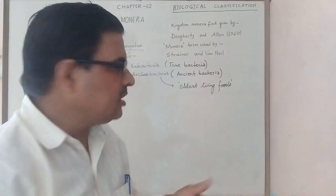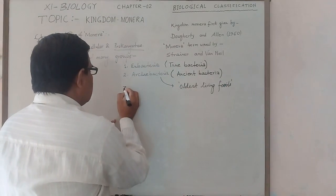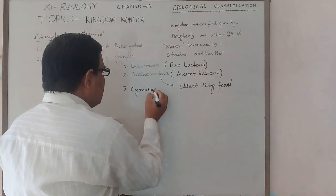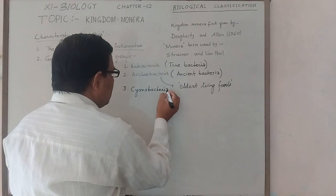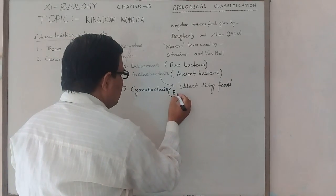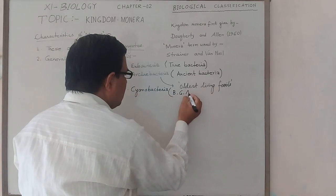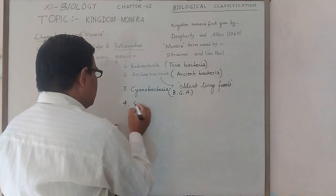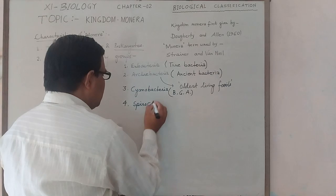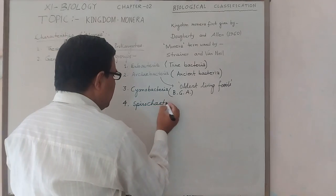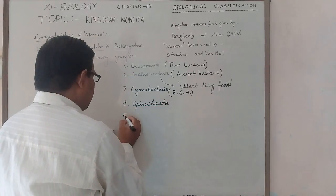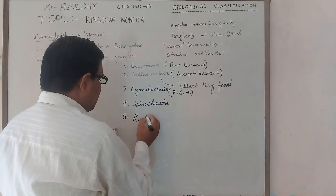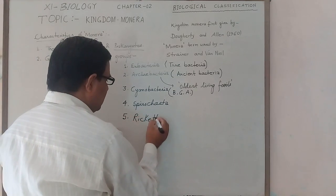The third category is Cyanobacteria, which means Blue Green Algae. The fourth category is Spirochetes, and the fifth category is Rickettsiae.